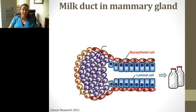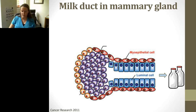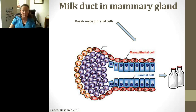Let me quickly review the mammary gland and the milk duct, because some terminology comes from cell types. If we look at the mammary gland, there are luminal cells and myoepithelial cells, and some of these are called basal myoepithelial cells. Milk is secreted through the duct, and these basal myoepithelial cells help push the milk out — they can have a myocyte-like phenotype.